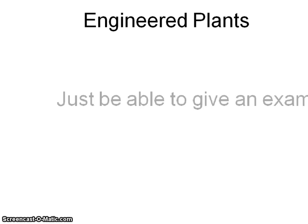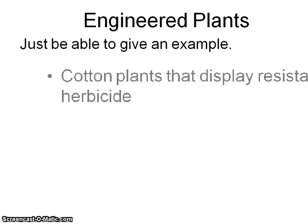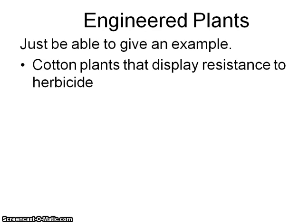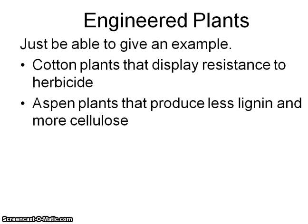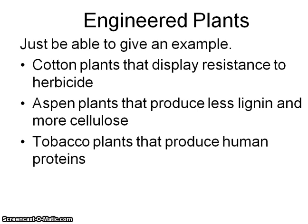We can make plants with all kinds of things — any kind of an example is fine. Cotton plants that are resistant to herbicides. Aspen plants that make more cellulose — in other words, when we want trees that make paper, we can make them more efficient at making paper. There was also tobacco plants that make a human protein, and mustard plants that produce biodegradable plastics.